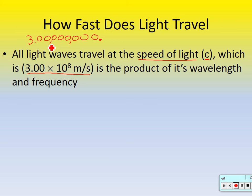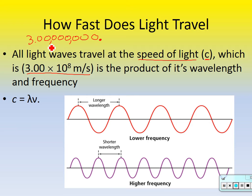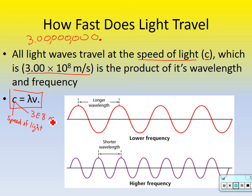All light, doesn't matter what color it is, travels at that speed. Here's an equation we're going to use today. C — the speed of light — is equal to lambda times V, where lambda is wavelength and V is frequency. So wavelength times frequency equals the speed of light. You will always know what C equals: 3 times 10 to the 8th meters per second.